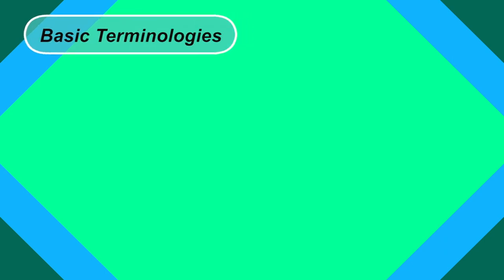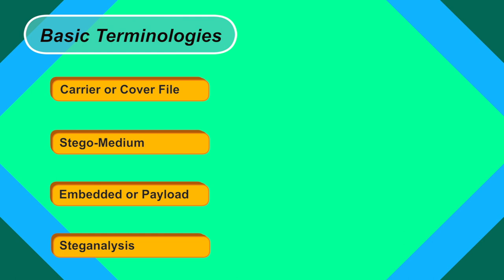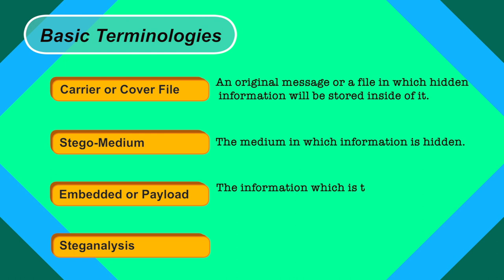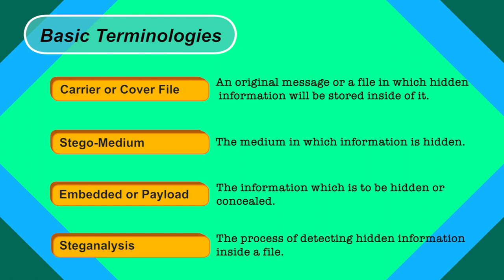Basic terminologies of steganography: Carrier or cover file — the original file in which hidden information will be stored. Stego medium — the carrier plus the hidden information. Embedded or payload — the information which is to be hidden. Steg analysis — the process of detecting hidden information inside a file. For example, if you put a letter inside an envelope to send to your friend, the envelope is the cover file, the letter is the payload, the envelope with letter is the stego medium, and if someone tries to open the letter, that attempt is called steg analysis.